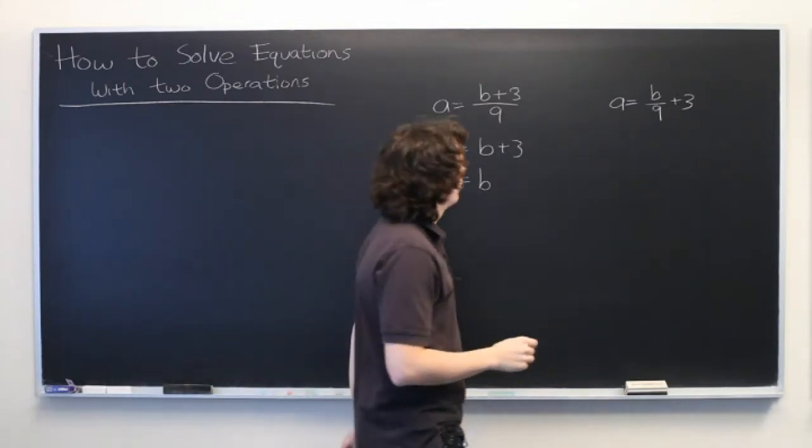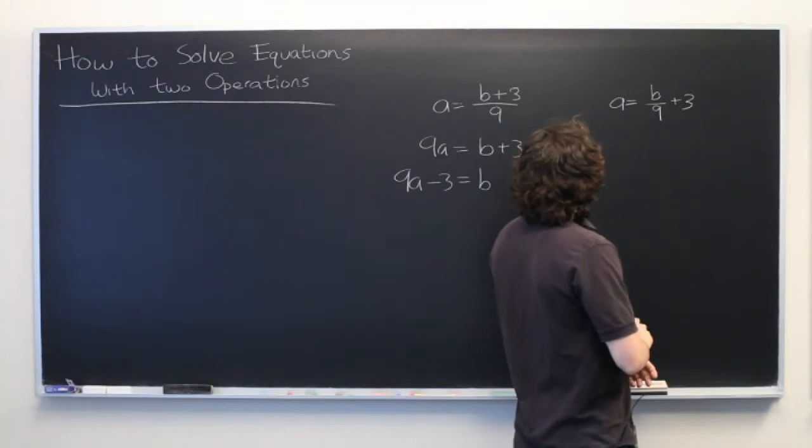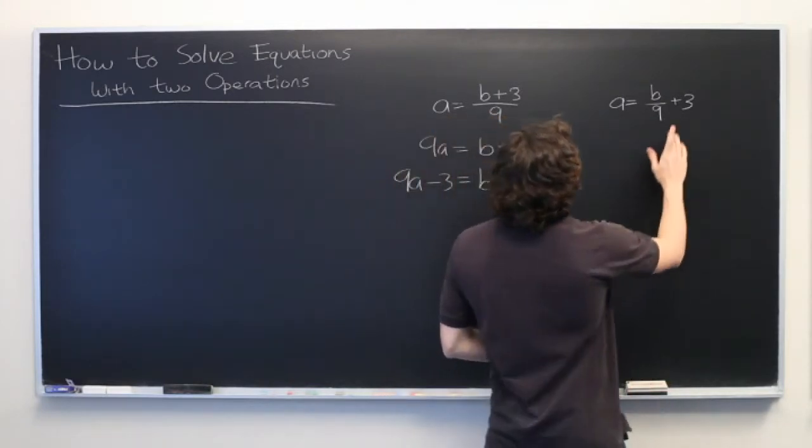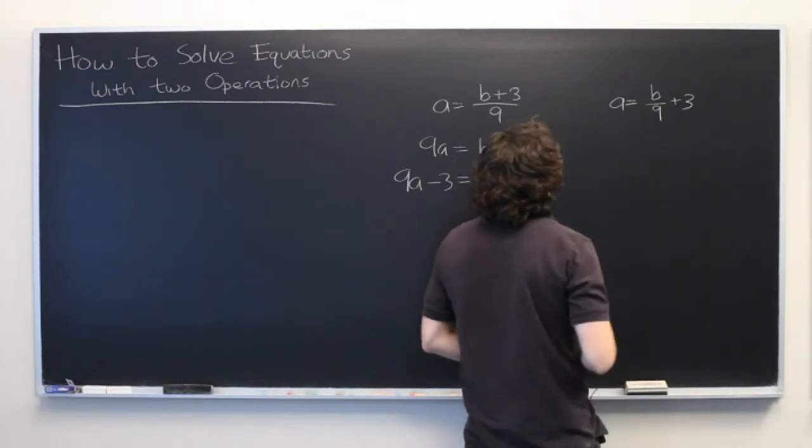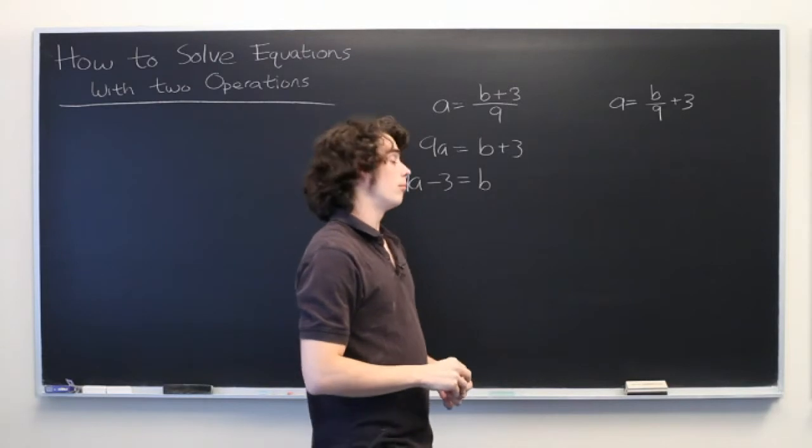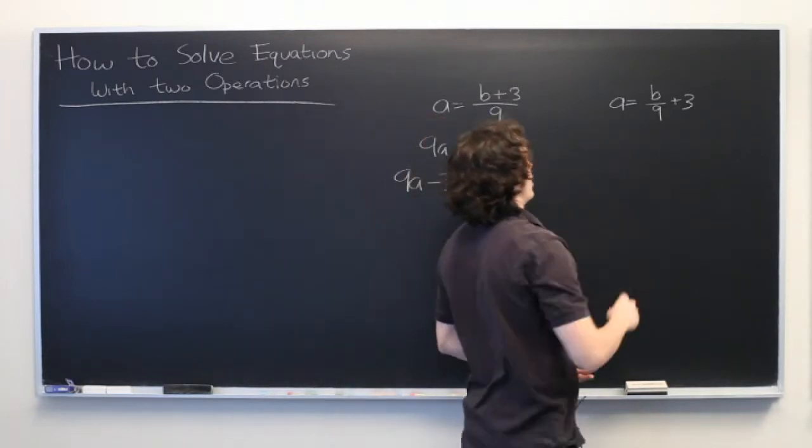Let's take a look at the other side. Now there's two different ways that we could go about doing this. We could bring 3 over to the left side first and then multiply by 9, or we could multiply by 9 and then bring the constant over to the other side of the equation.